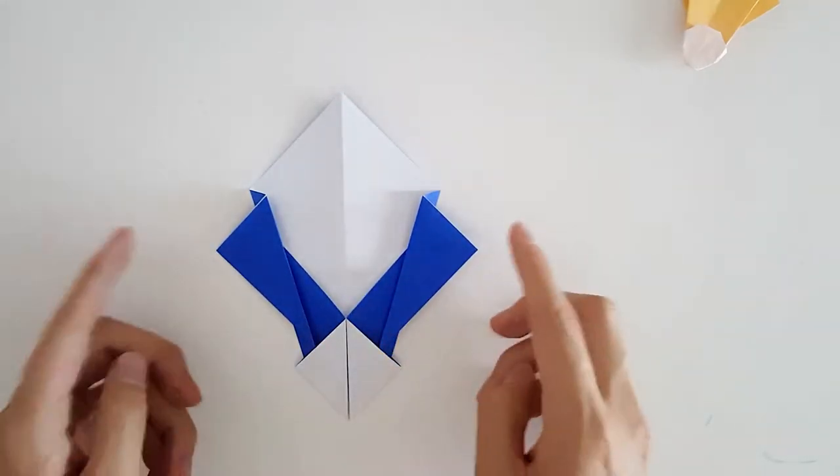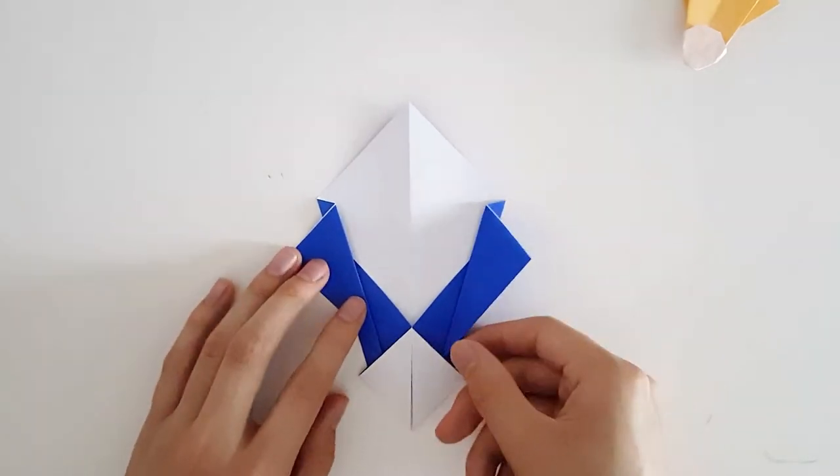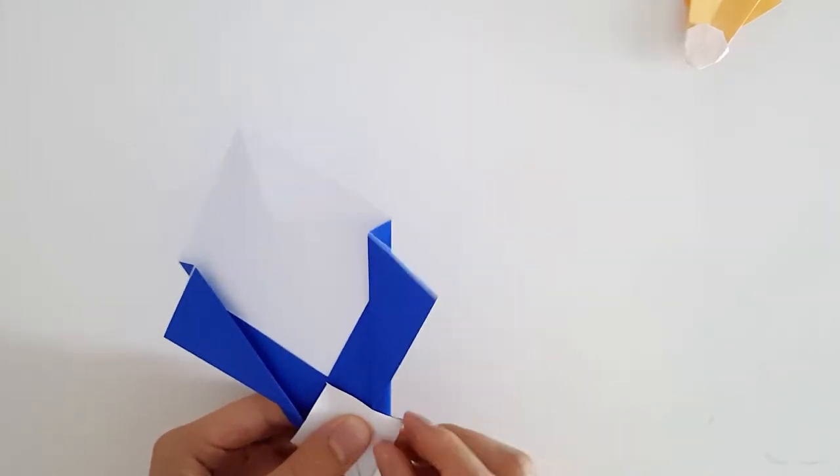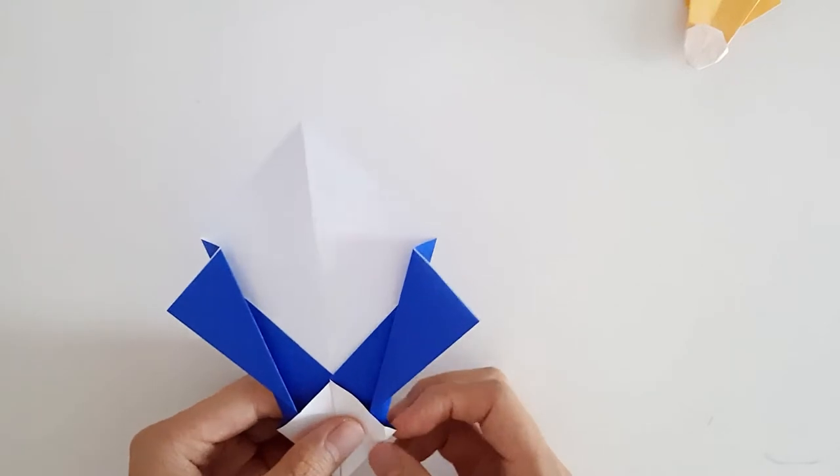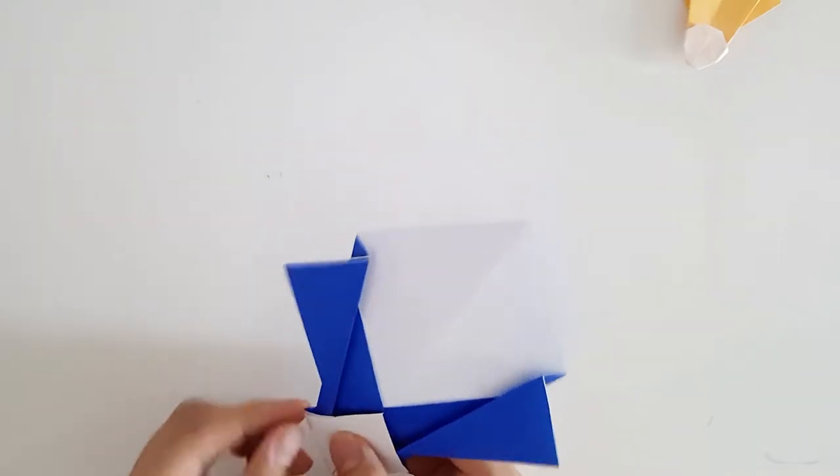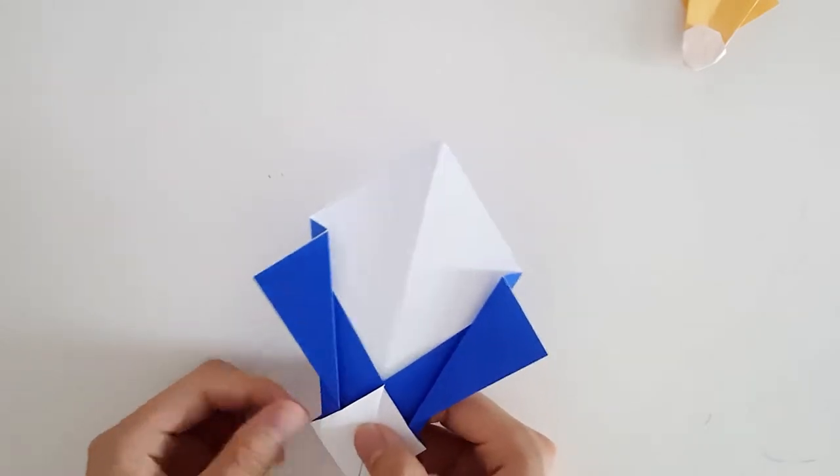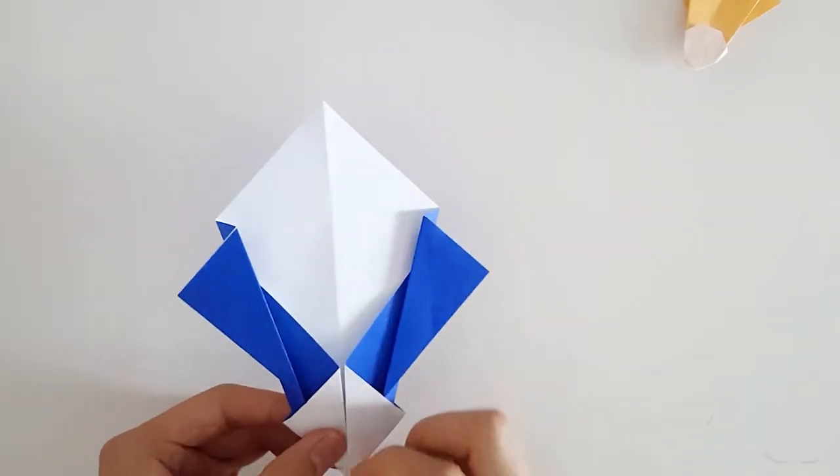Once we've gotten that, we're just going to move on to the bottom part now. We're going to fold these backwards. We're just going to do a little bit and kind of hide it behind to try and create a more seamless shape at the bottom.